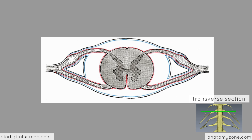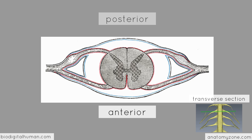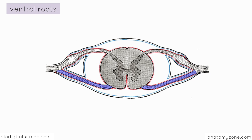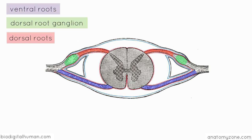Down at the bottom is anterior and up at the top is posterior. As I showed you before on the 3D models, we've got the ventral roots, which I've highlighted in purple, the dorsal root ganglion, and the dorsal root of the spinal nerve. As I mentioned in the previous part, the ventral root carries efferent motor information and the dorsal root carries afferent sensory information. So afferent arrives, efferent exits.